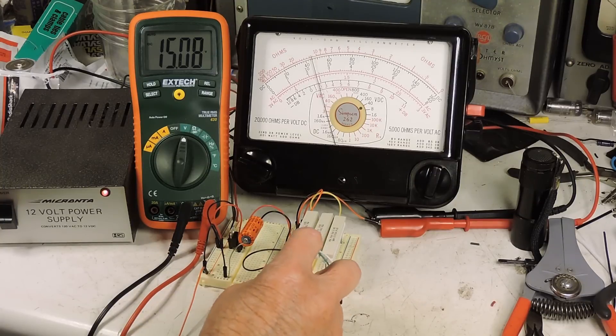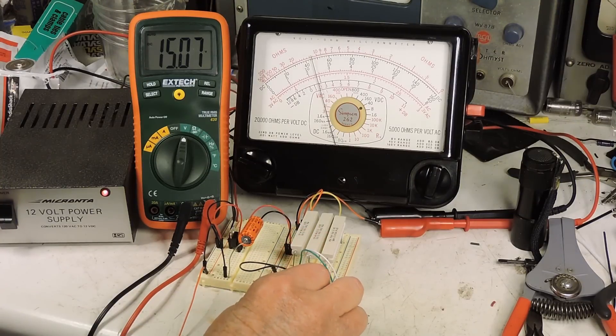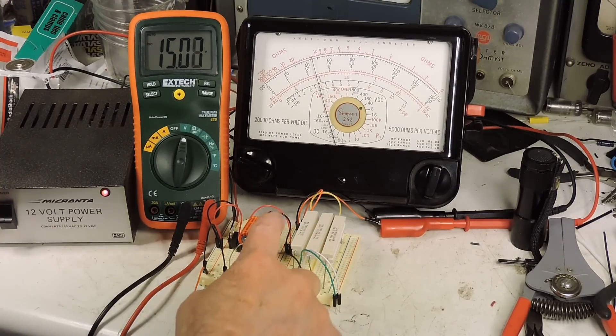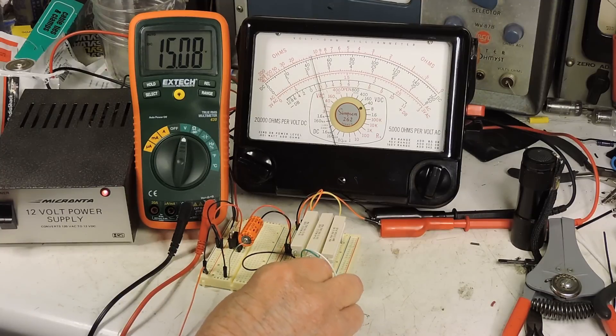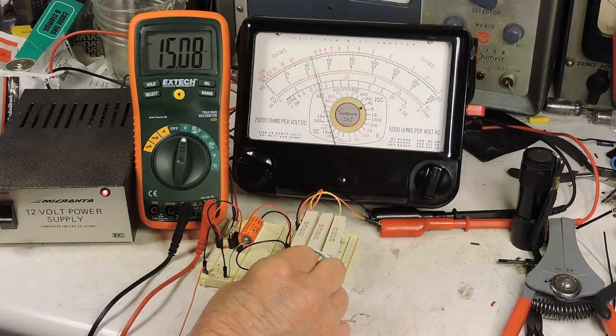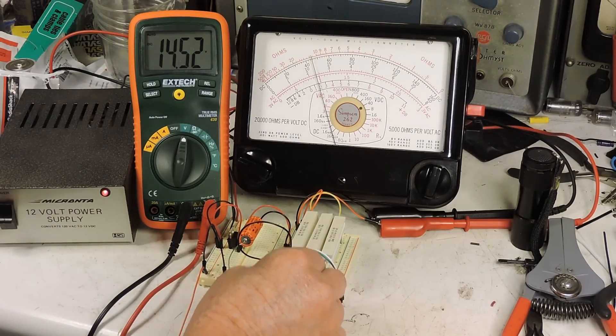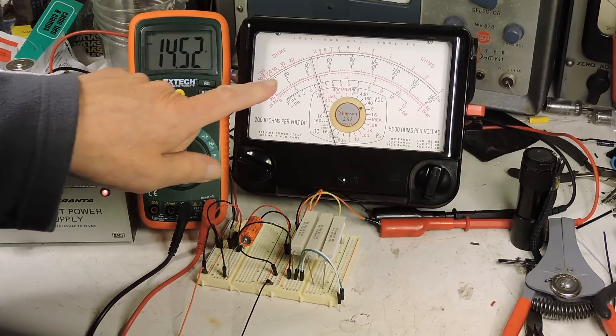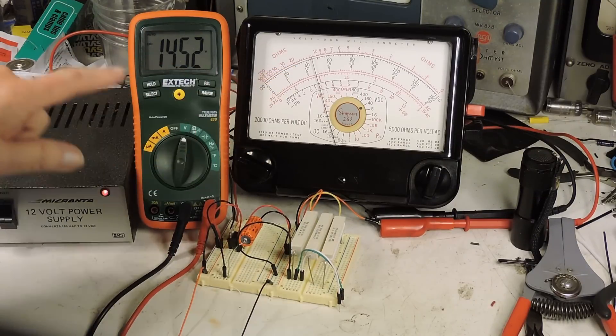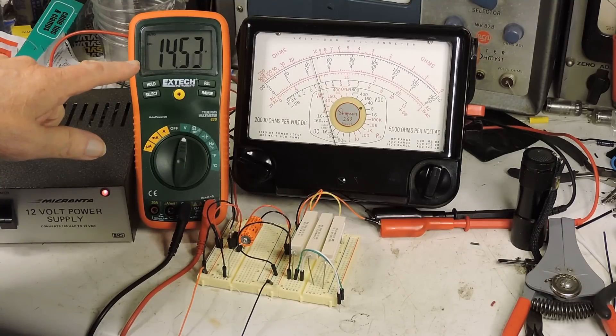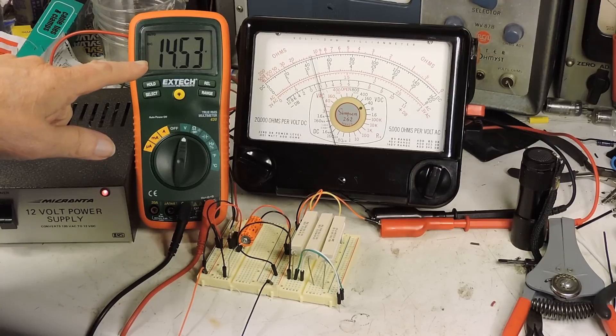Okay now I'm going to put a 100 ohm resistor across the output of this regulator. And we can see that almost nothing happened over here but our voltage has dropped to 14.5.